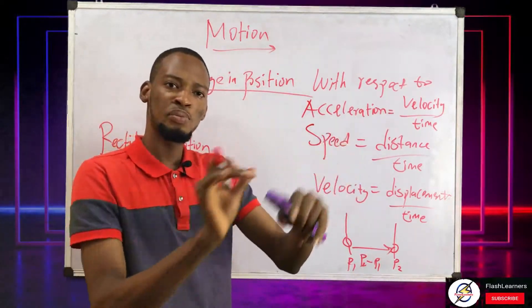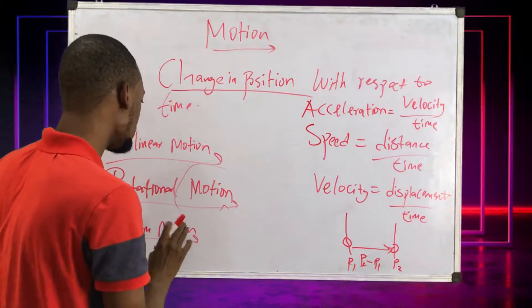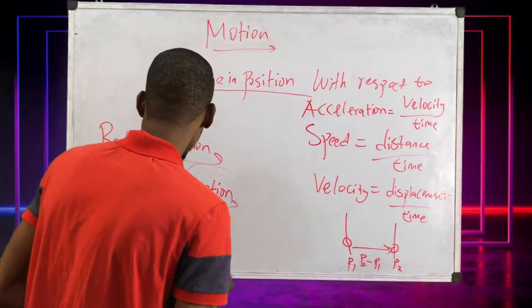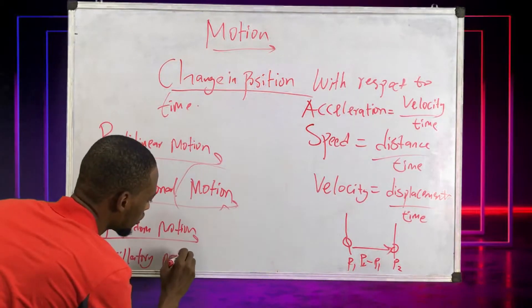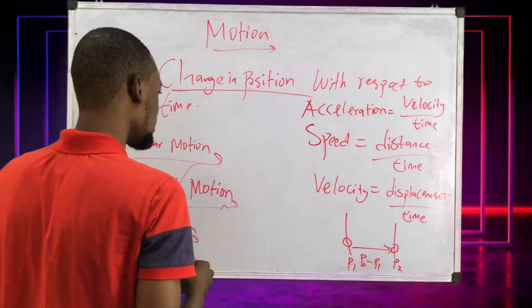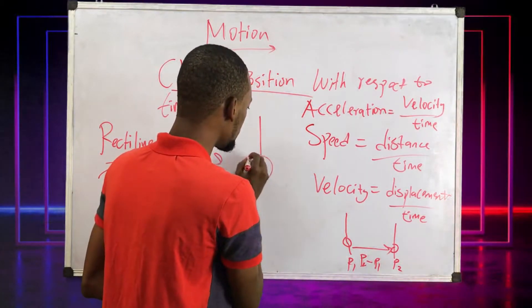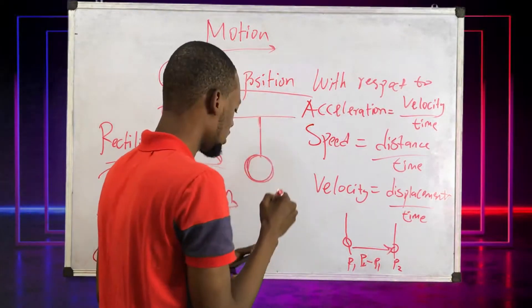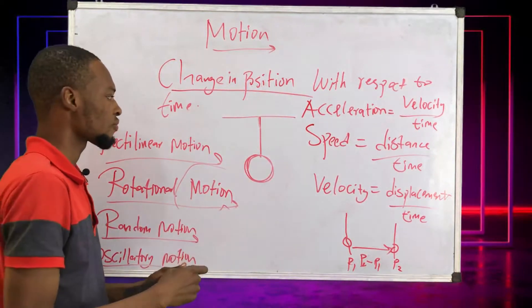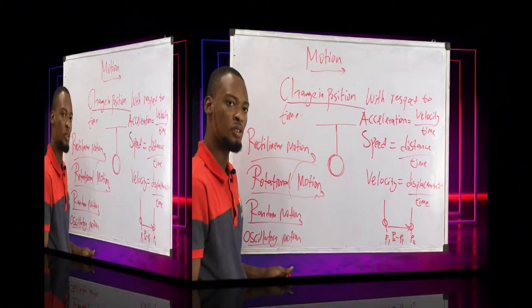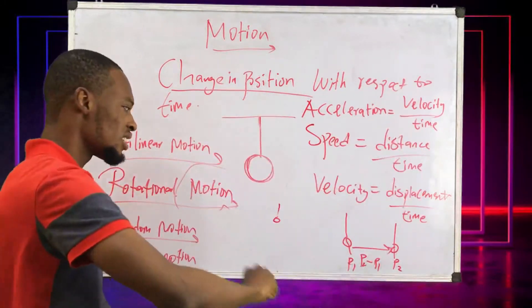Then we have oscillatory motion. Oscillatory motion is simply to and fro motion of a body. Let's say you are in your gym - this is the punching bag tied up here. As you punch it, it goes, it comes, it goes, it comes. That's oscillatory motion. Or a pendulum which has a ball - as you hit it, it's going and coming. That's oscillatory motion.